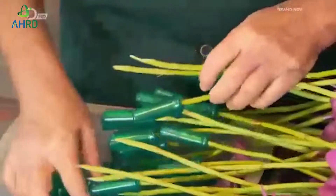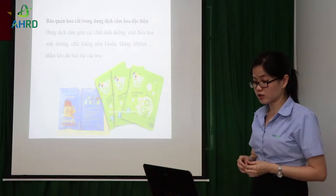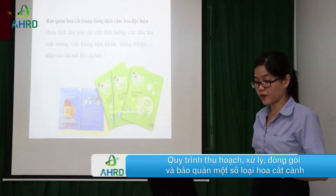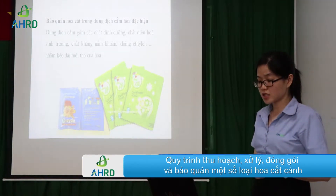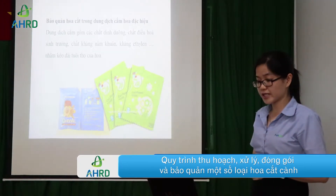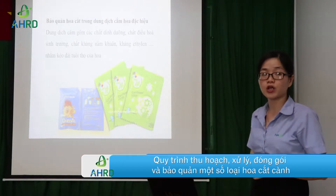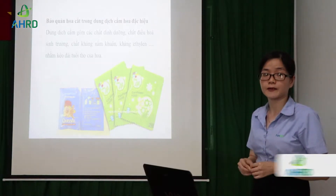Dung dịch đặc thù trong hoa bao gồm các chất sinh dưỡng, các hoạt chất tiêu hoạt sinh trưởng, chất kháng khuẩn, chất kháng nấm — nhằm có thể kéo dài tuổi thọ của hoa cắt cành.